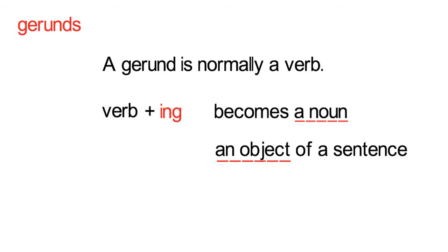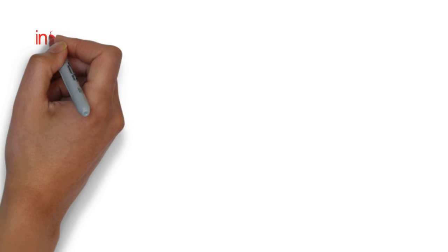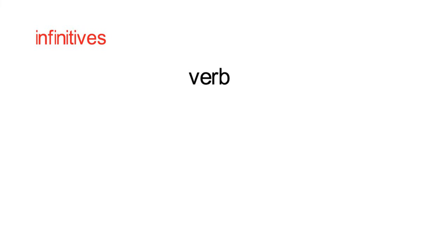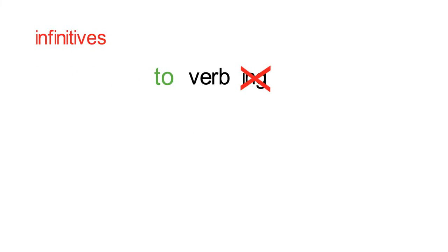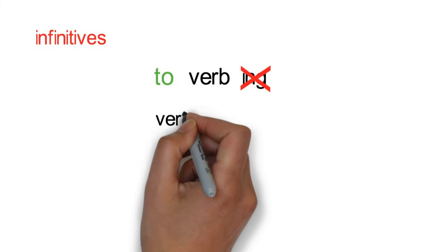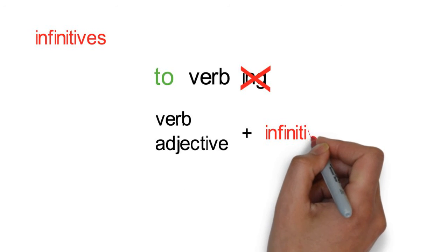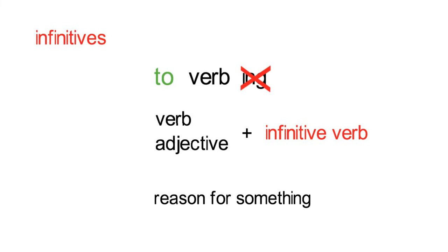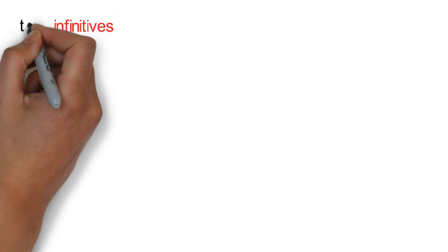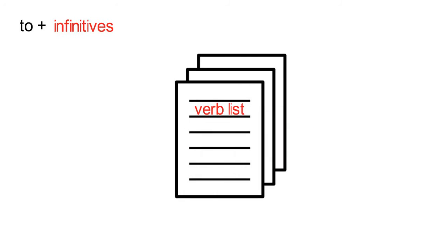Now let's turn our attention to infinitives. Infinitives are verbs, but instead of adding -ing to the end, we add the word 'to' to the beginning. Infinitives can be used after verbs or adjectives, and to give a reason for something. There is a list of verbs with your note-taking sheet that can be followed by an infinitive, but here are some examples.